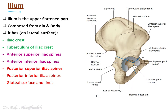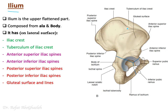Now let us shift to the ilium. Looking at the lateral surface of the right hip bone, the ilium is like a fan shape, which we can divide roughly into two parts: the ala part, which is like the wing of the fan, and the body, which represents the handle of the fan. On the lateral surface, we can identify several important features.